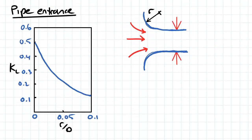So with a pipe entrance, you have a graph like this. These graphs will always be given to you in an exam situation. You've essentially just got to, for a certain radius and a pipe diameter, so a radius of your pipe entrance, you'll have a corresponding value for KL, and therefore you can work out the minor head loss.